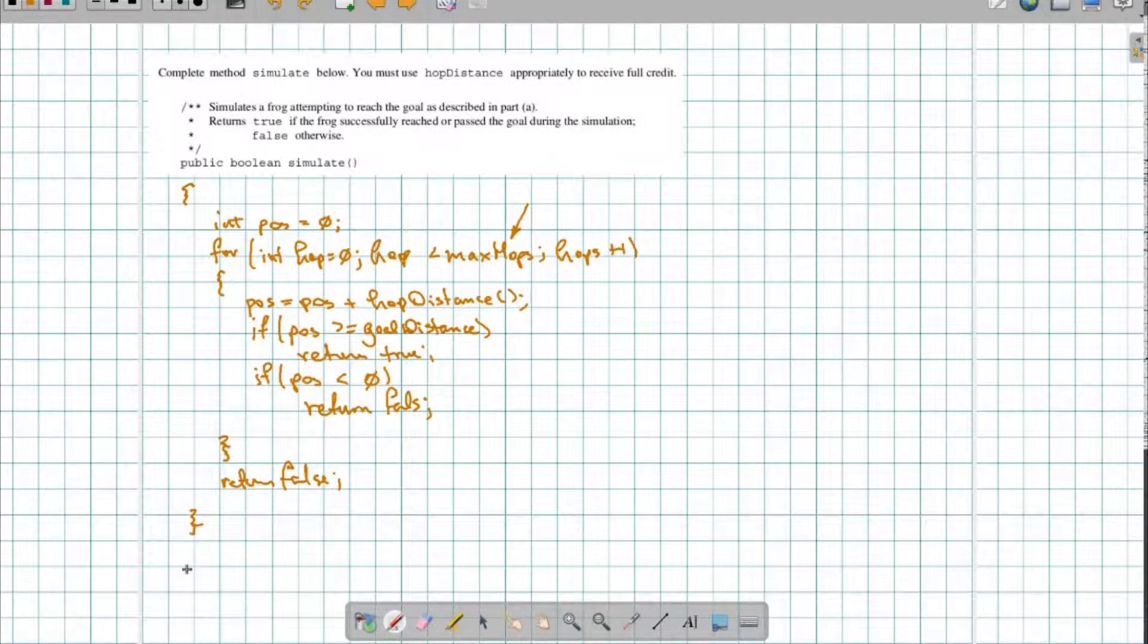So notice what's happening here. I'm starting my count at zero, and I'm going to keep going until I've reached my goal distance. And that's a good situation. Or, I go backwards. I end up with a negative position, and that's a bad situation. Or, I've reached the maximum number of hops. If I reach the maximum number of hops, that means I haven't reached my goal, and that's a bad outcome. Which is why I'm returning false here. So that's what I'm looking at for part A.